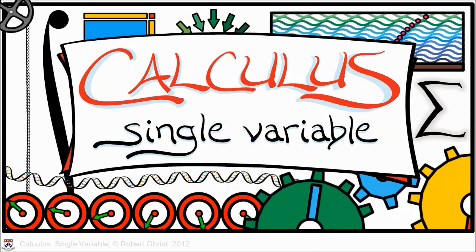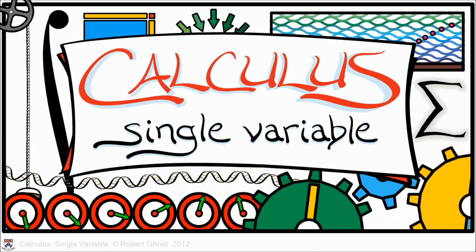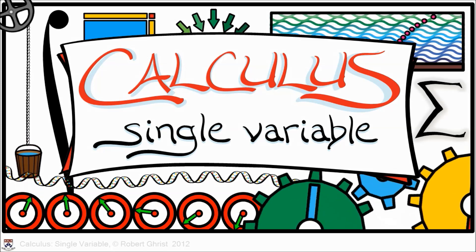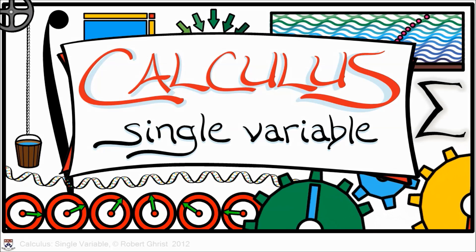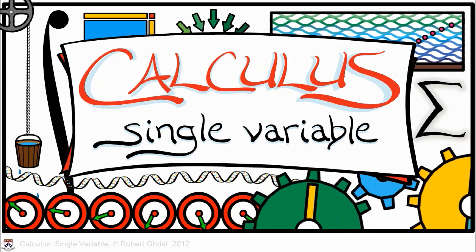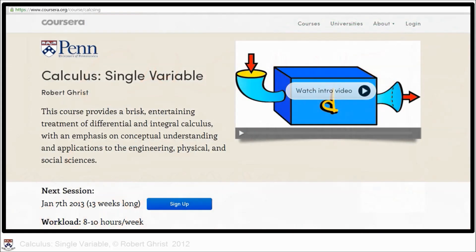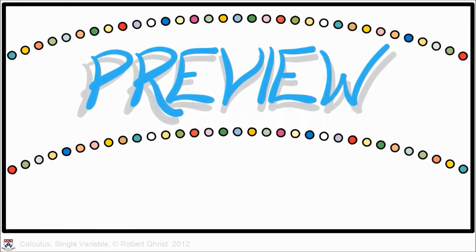This is calculus in a single variable. I'm Robert Greist, Professor of Mathematics and Electrical and Systems Engineering at the University of Pennsylvania. This is an online course to debut on Coursera, January 7, 2013. The course will last for 13 weeks. I'd like to give you a preview to the styling and structure of the course.